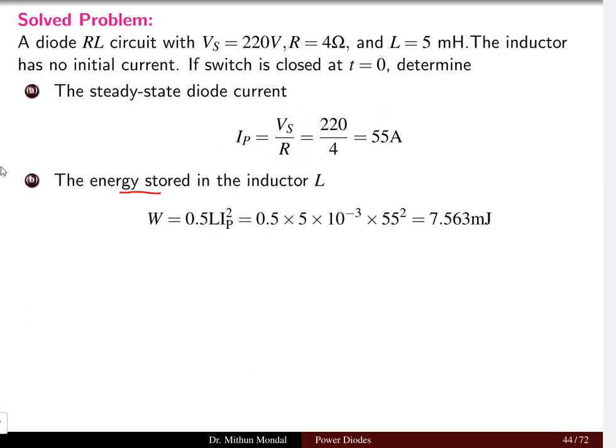When we talk about the energy which is stored in the inductor, the energy stored in inductor formula is half L I squared. So half times 0.5, L is the inductor value of 5 millihenry and the current is 55 amperes, and hence we get the energy as 7.563 millijoules.